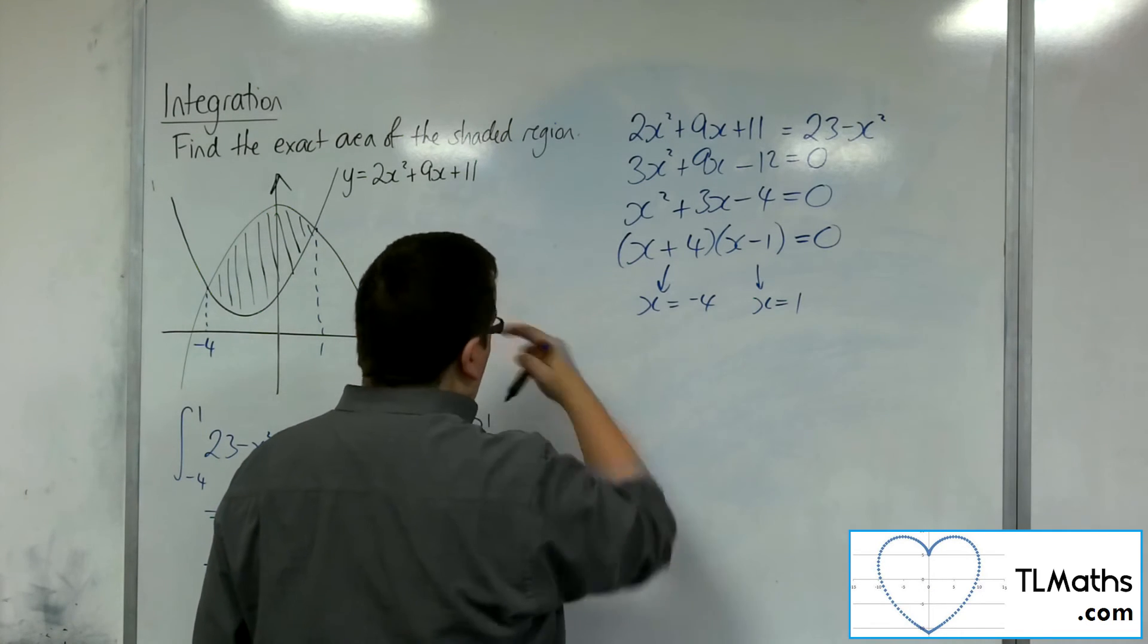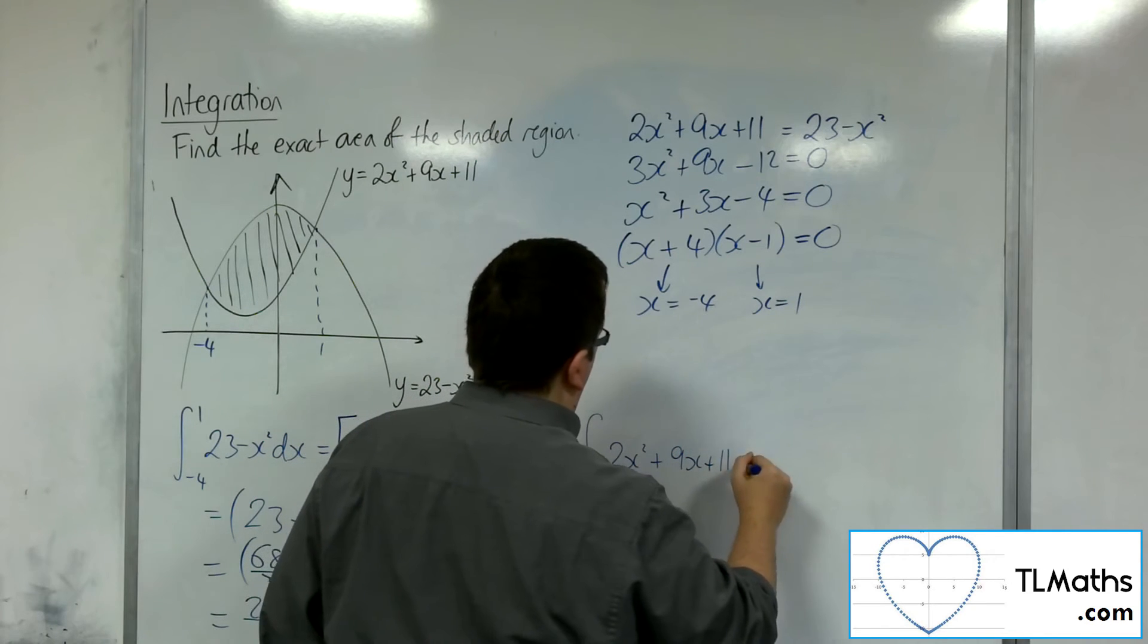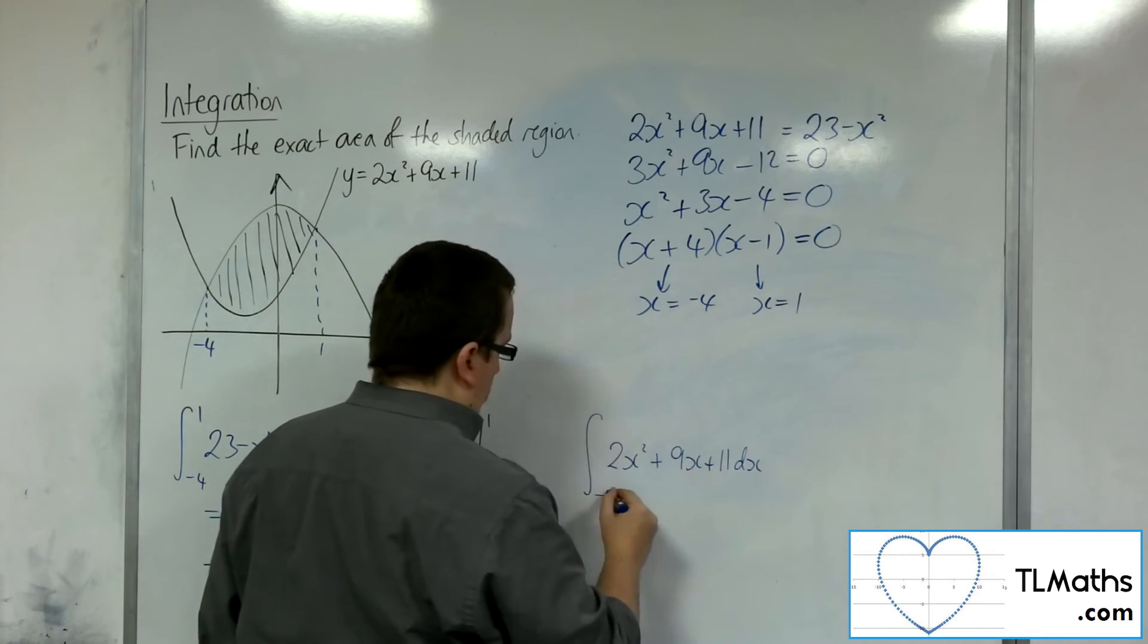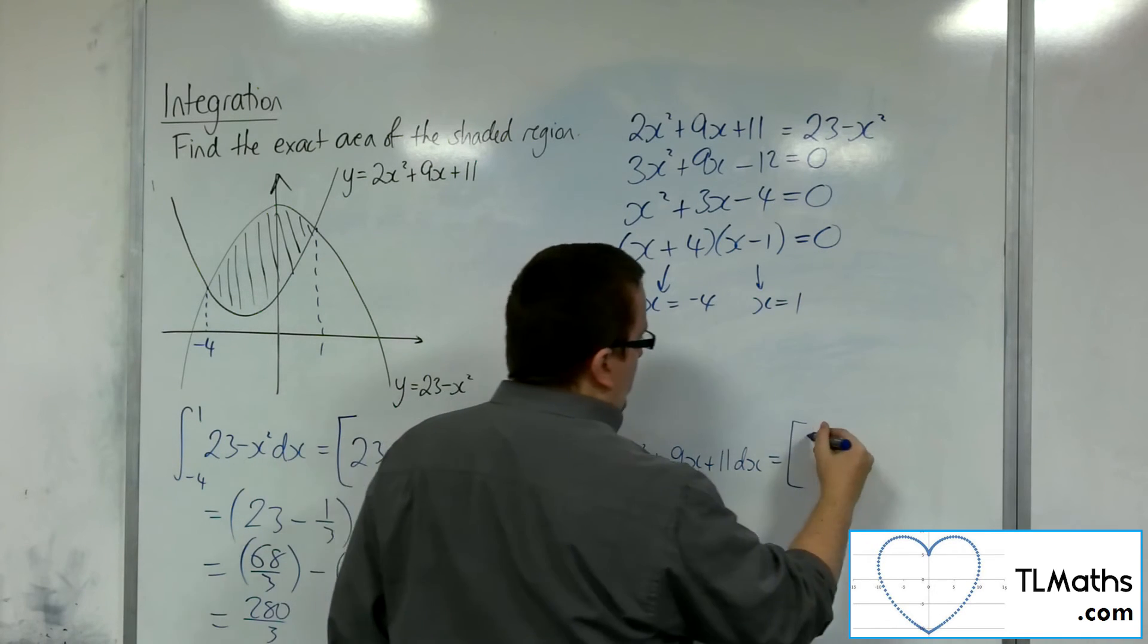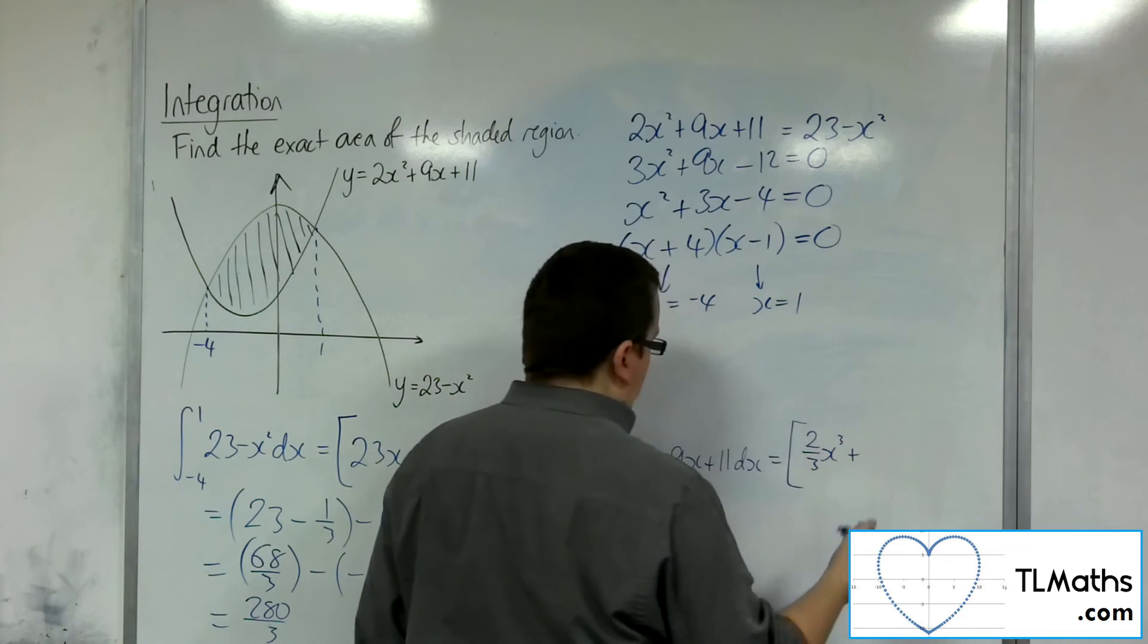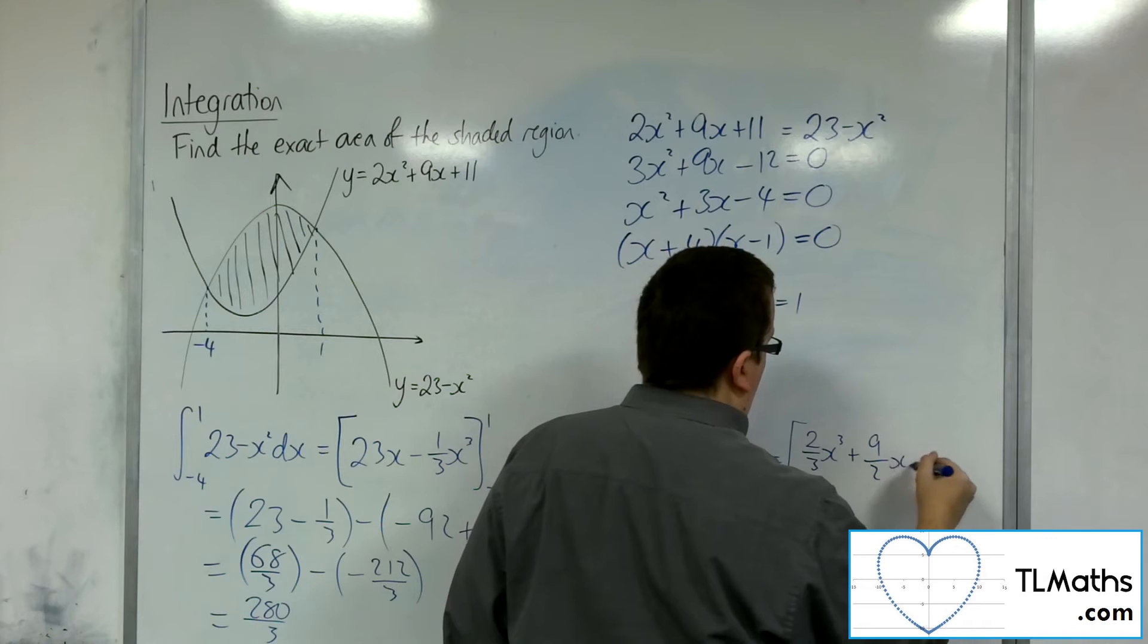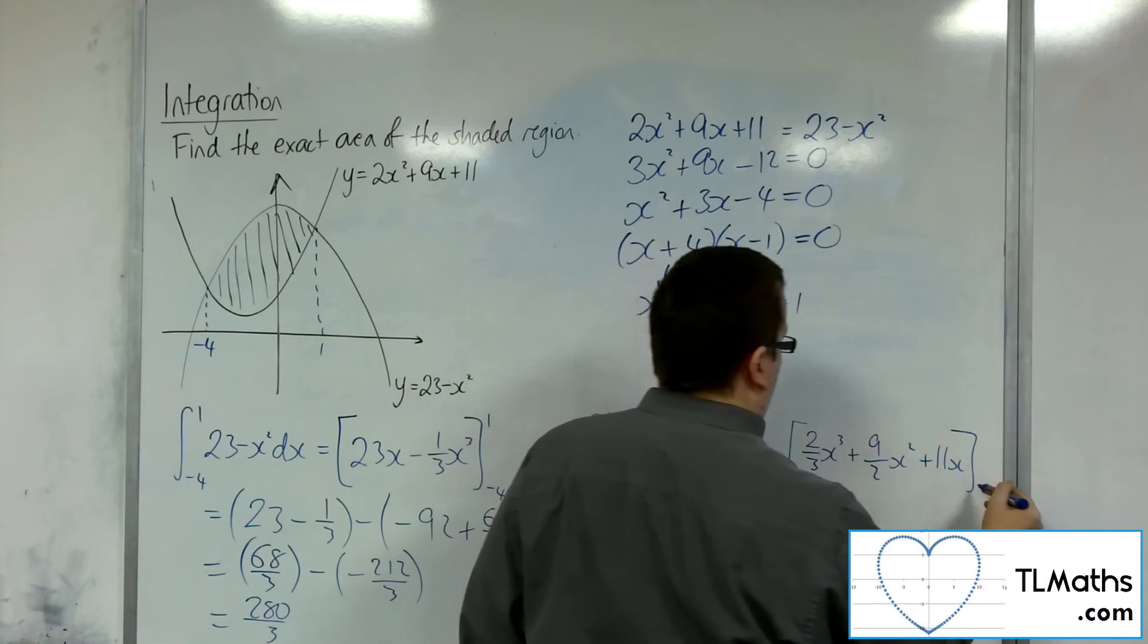So I'm going to integrate 2x squared plus 9x plus 11 between the minus 4 and 1. So add 1 to the power, divide by the new power, so 2 thirds x cubed plus 9 halves x squared plus 11x evaluated between minus 4 and 1.